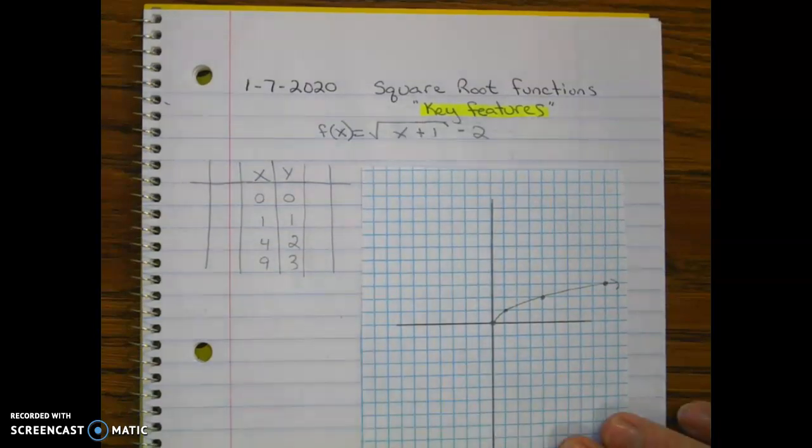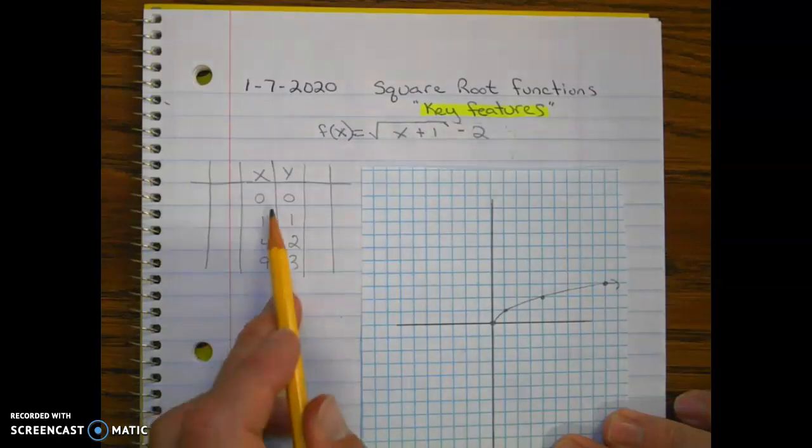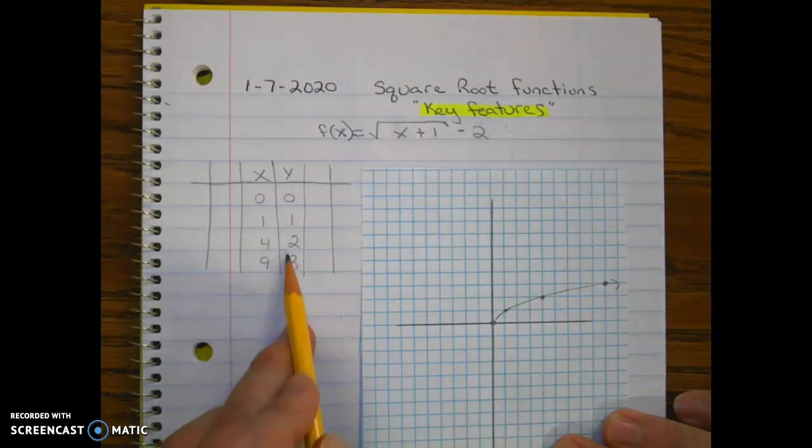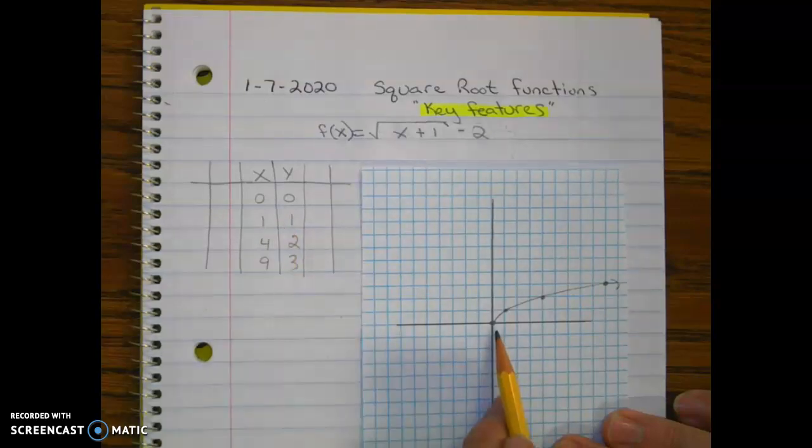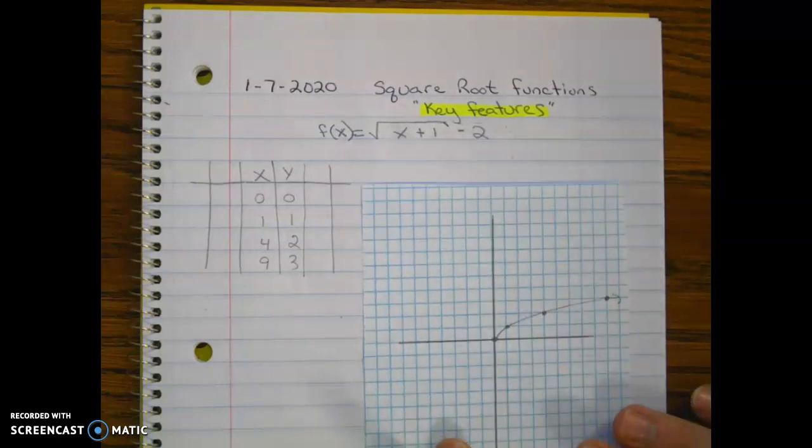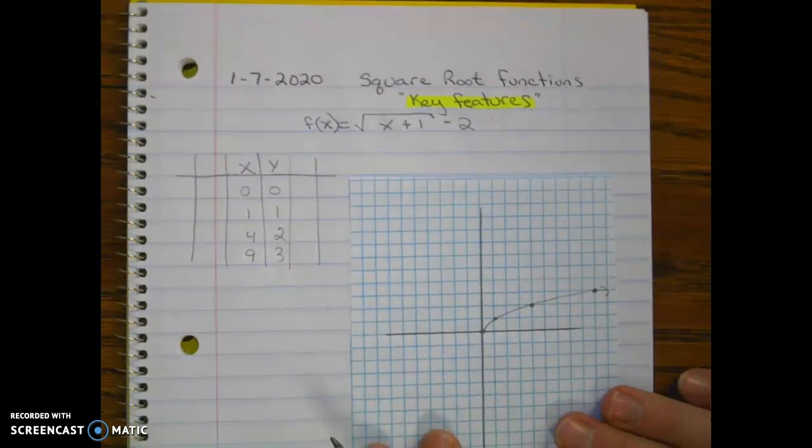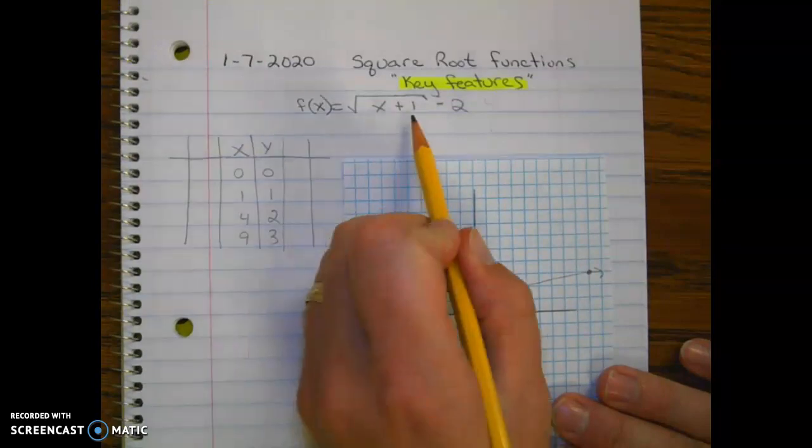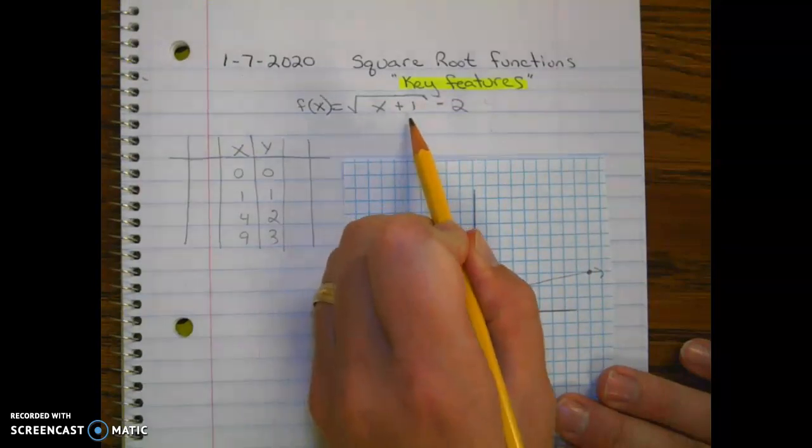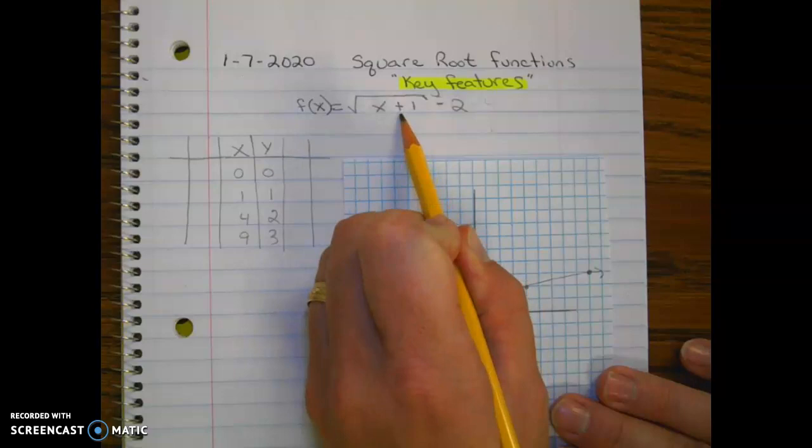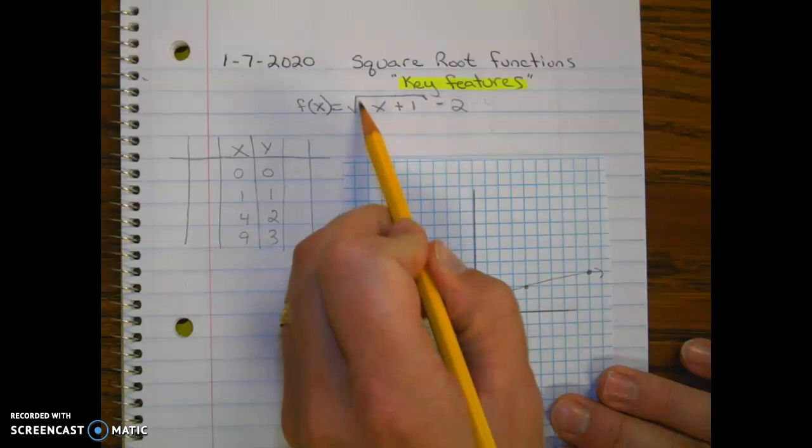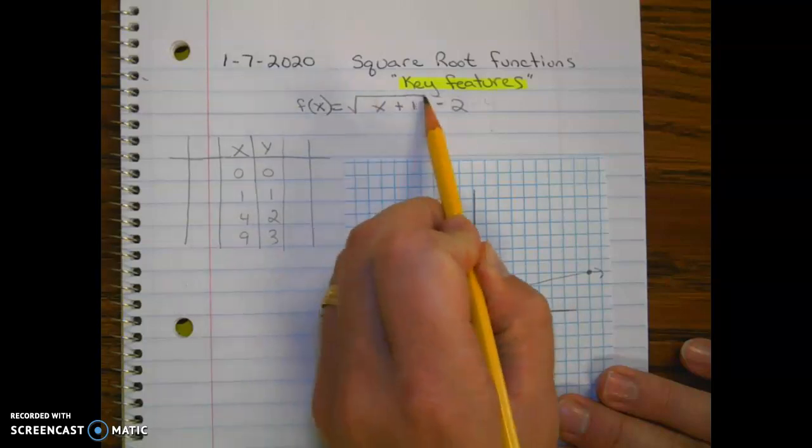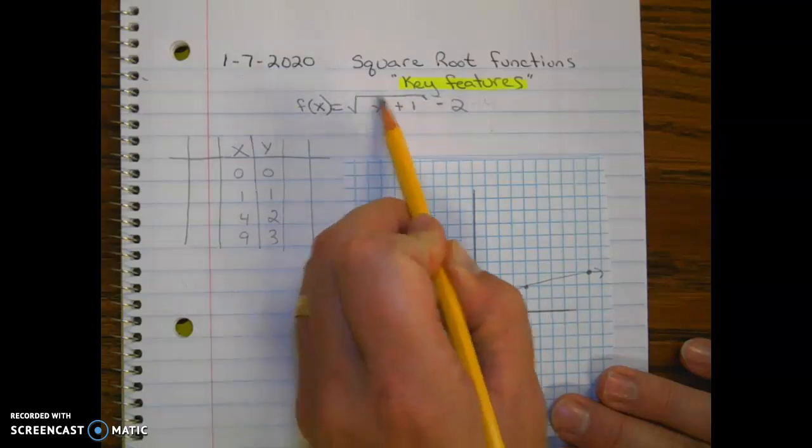So notice right off the bat I started off with my parent table, which remember I asked you to memorize, and my parent graph. So let's first of all write down the parameter changes and let's graph this. First of all, we have a translated one unit to the left. Notice the plus one is inside the grouping symbol. The grouping symbol in this case is a square root, which is a type of radical.